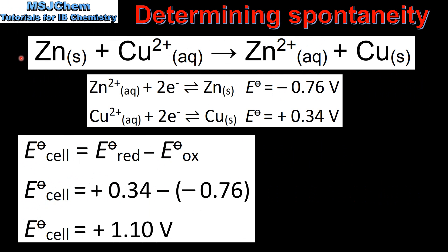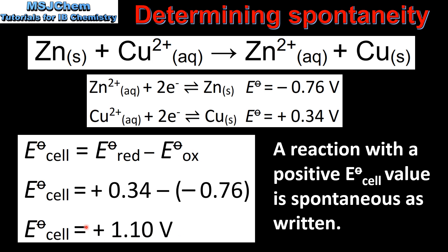In the previous video we calculated the cell potential for this reaction. The zinc is oxidized to form zinc 2+ ions and the copper 2+ ions are reduced to form copper metal. We used the standard reduction potentials as they are in the data booklet. Using this equation we calculated the cell potential to be positive 1.10 volts. The positive sign for the cell potential means that the reaction is spontaneous as written.